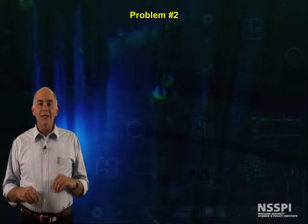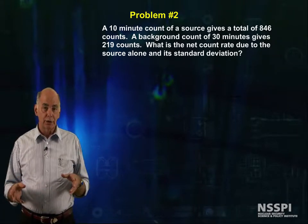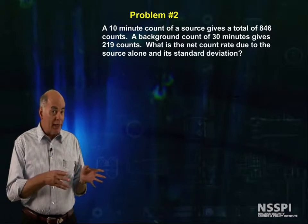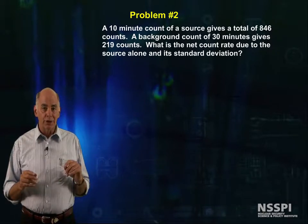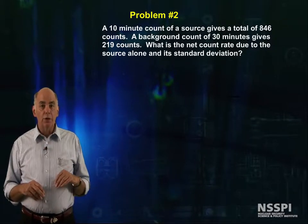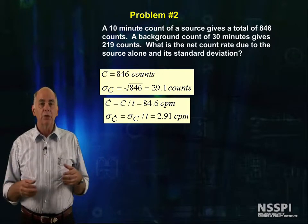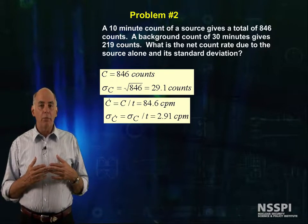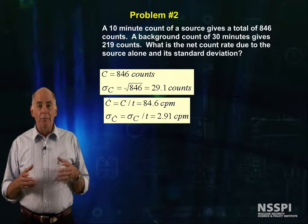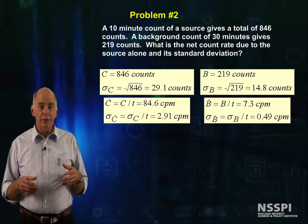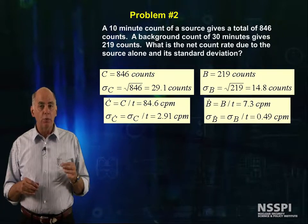Let's work another. A 10-minute count of a source gives a total of 846 counts. A background count of 30 minutes gives 219 counts. What is the net count rate due to the source alone and its standard deviation? The gross count is 846 in 10 minutes, so the gross count rate is 84.6 counts per minute with a standard deviation of 2.91 counts per minute. The background is 219 in 30 minutes, so the background count rate is 7.3 counts per minute with a standard deviation of 0.49 counts per minute.